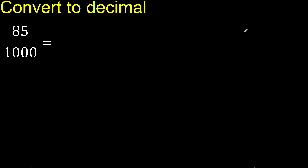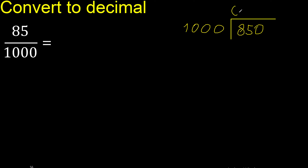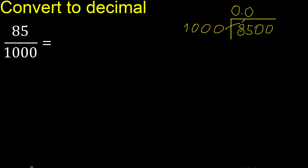First, 85 divided by 1000. 85 is less than 1000, therefore complete with zero. Zero point — place the decimal only once. 1000 multiplied by which number is nearest to but not greater?